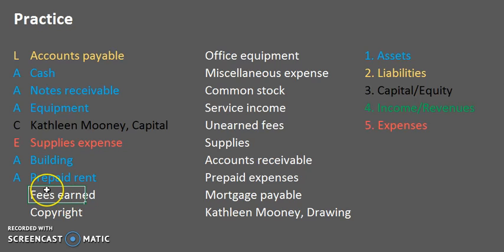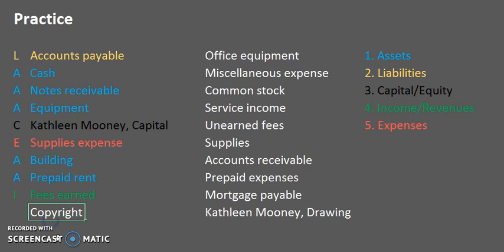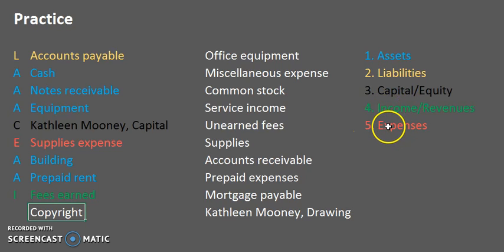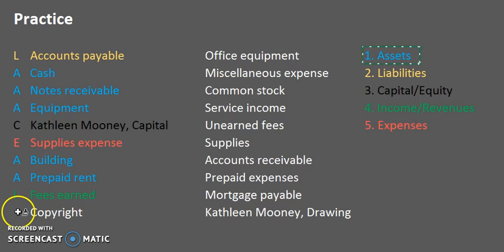Fees Earned is a straightforward revenues example. These are fees we have earned, and at the introductory level we simply think of these as amounts earned — so this is an income or revenues account. Copyrights: if you get stuck, run through the list — assets are things we own, liabilities are things we owe, capital is the owner's interest, income is what we earn, and expenses are costs incurred to generate revenues. A copyright does not fit the others, but it is something we own, so it is an asset.